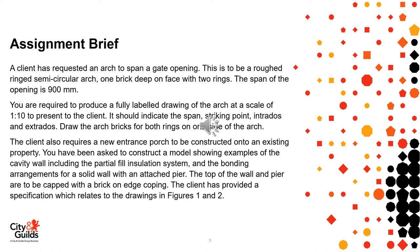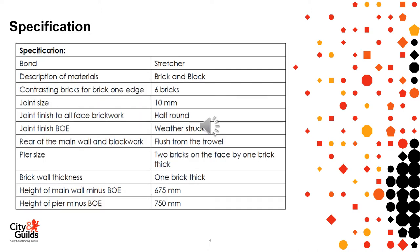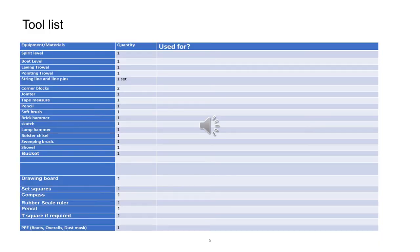The client also requires a new entrance porch in Task 2, which covers the building of a sample model of the section of the porch. This is the specification supplied for the practical task — everything you will need will be on that specification. This is an example of a tool list which must be completed by the candidates prior to starting the model. The time taken is not taken out of the allocated time for the task.